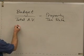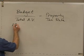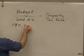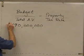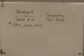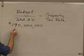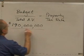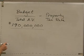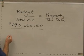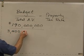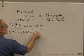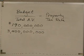Let's use some numbers here. Let's say the budget for our county were $190 million — that's what it took to run the county for a year. And let's say that the total assessed value in the county were $3.4 billion. I'm deliberately making numbers that are bigger than most calculators' displays will hold, so I'll show you how to handle that.